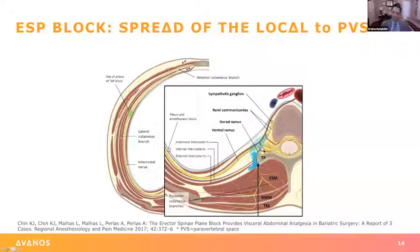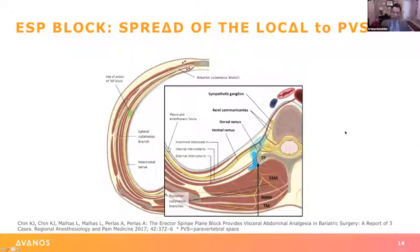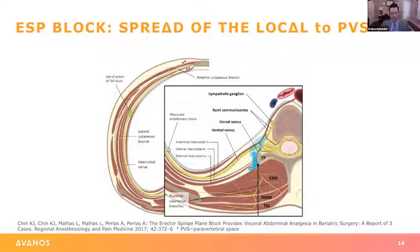Most studies now agree that some of the local anesthetic traverses into the dorsal root ganglia, giving you an even denser sensory block. A couple of cadaveric studies have shown spread into the ipsilateral epidural space. Whether that's occurring in humans and what the clinical relevance is remains to be determined, but I think we get some spread into the ipsilateral epidural space, which explains how profound the block tends to be.